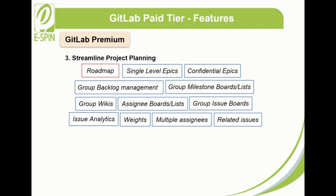Roadmap visualizes the flow of business initiatives across time to plan when future features will ship. Single-level epics manage your portfolio of projects more efficiently by tracking groups of issues that share a theme across projects and milestones. Confidential epics manage private information, issues, and sub-epics via confidential epics.